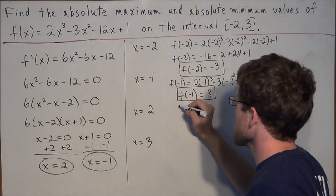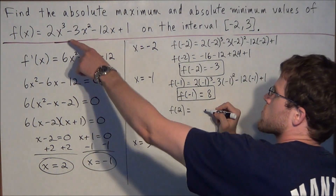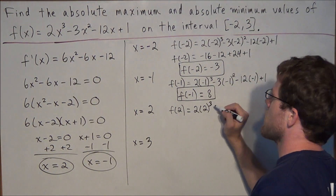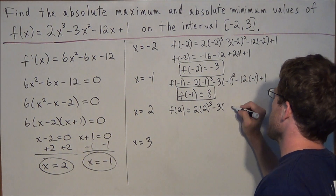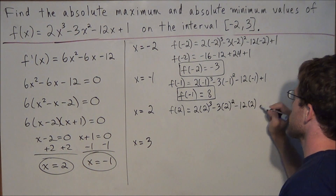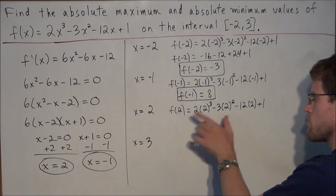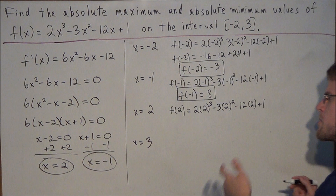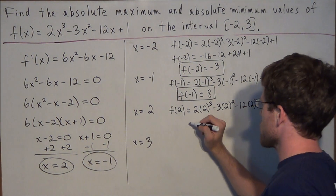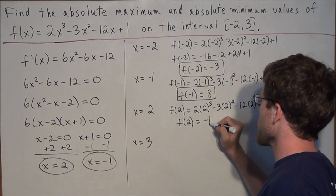Now we plug in positive 2: f(2) = 2(2)³ − 3(2)² − 12(2) + 1. Working out the arithmetic, we wind up with f(2) = −19.